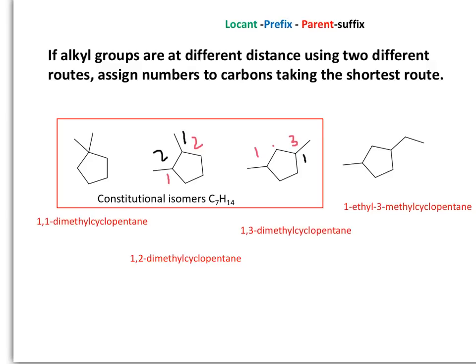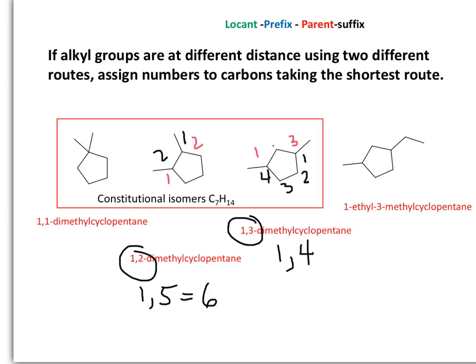If I select one, two, three, four, my name will have 1,4 — and that would be the wrong answer. We need to make sure the prefix numbers give us the smallest sum. One plus three is four; one plus four is five. In this case, one plus two is three, and if I go using the long route it will be one and five, with a sum of six — so that is not the right number.